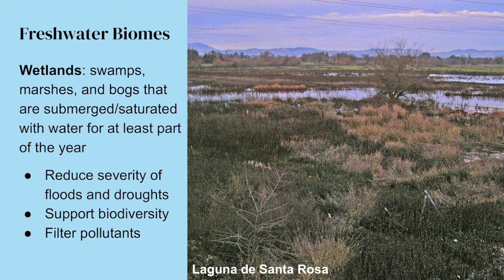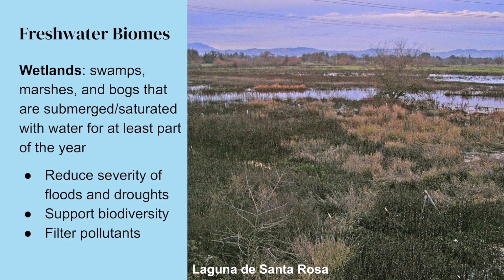Our last freshwater biome is a wetland. Wetlands include things like swamps, marshes, and bogs — they are submerged or saturated with water for at least part of the year. Wetlands are really important because they reduce the severity of floods and droughts, support very specific types of organisms with a lot of biodiversity, and they can filter pollutants. The Laguna de Santa Rosa is the largest freshwater wetlands complex on the Northern California coast.